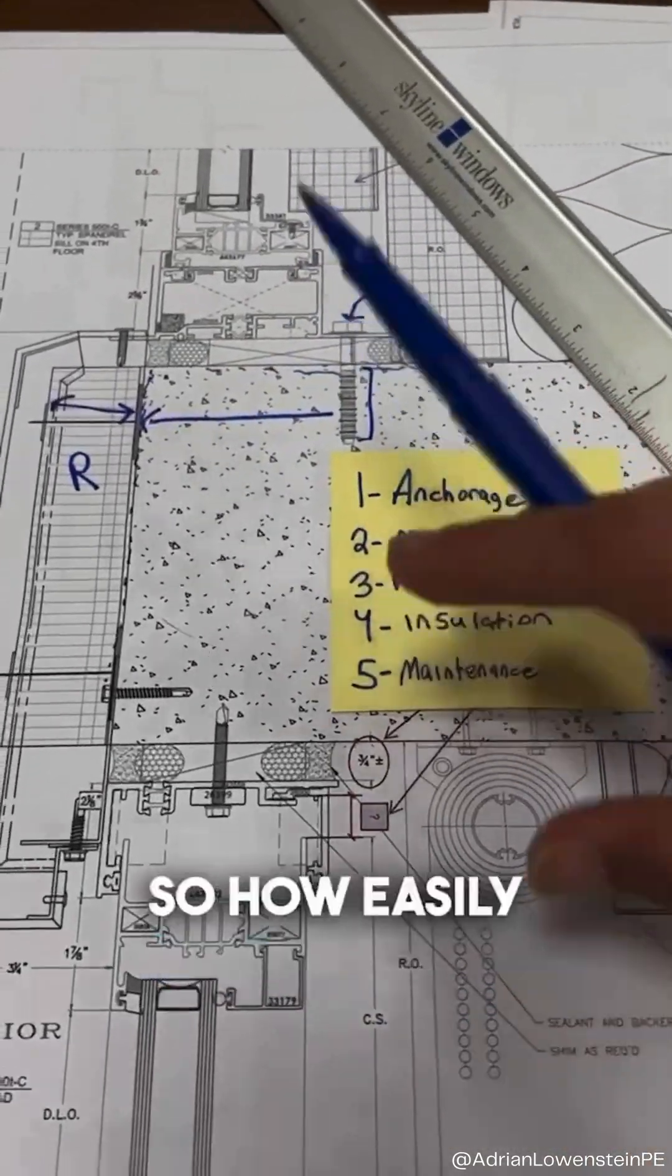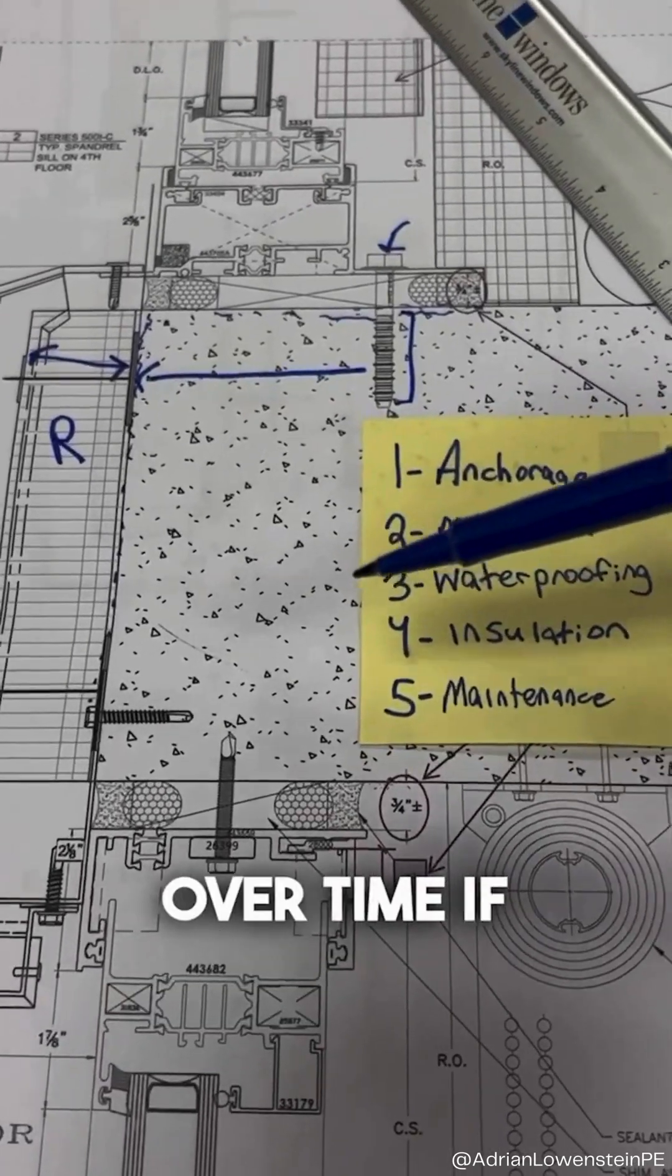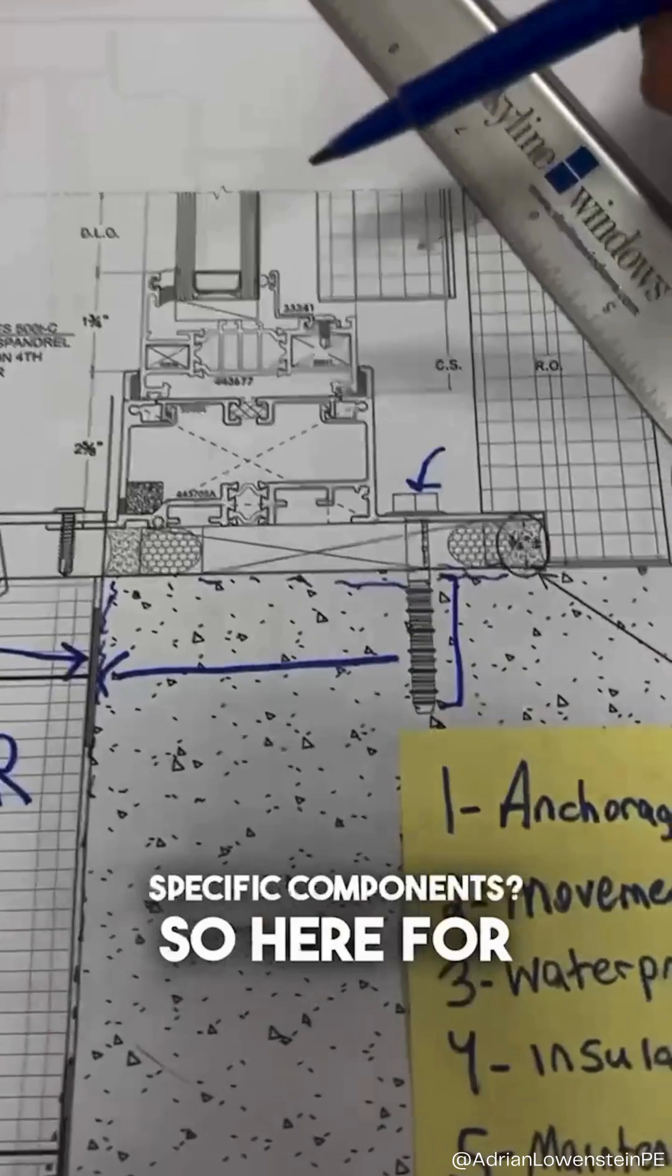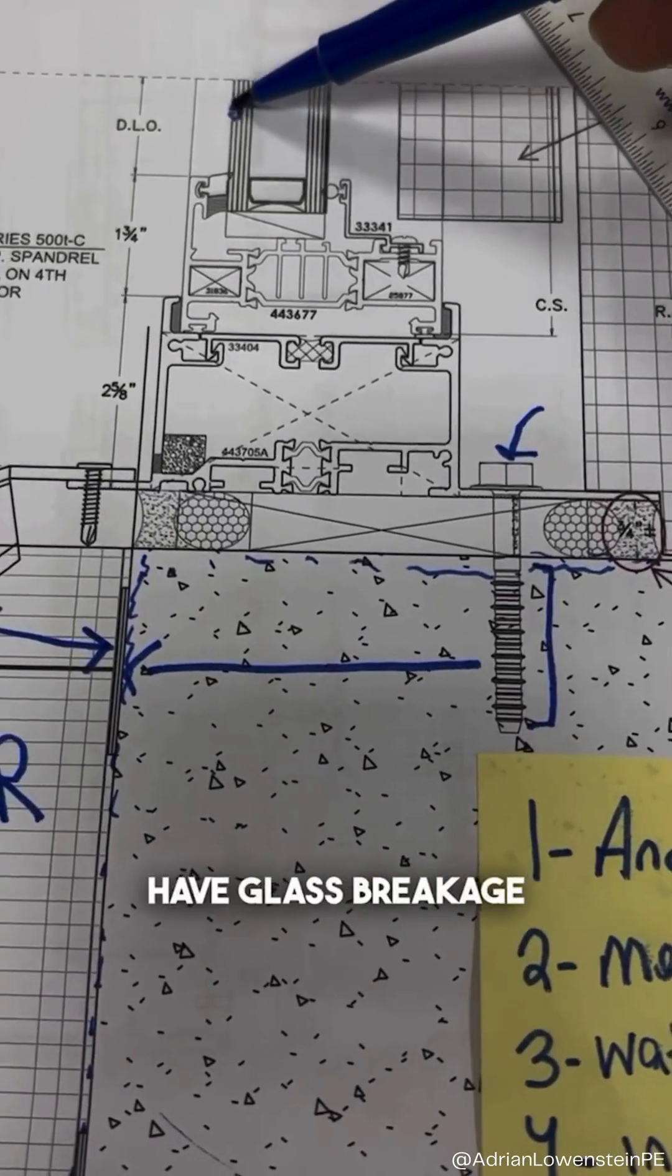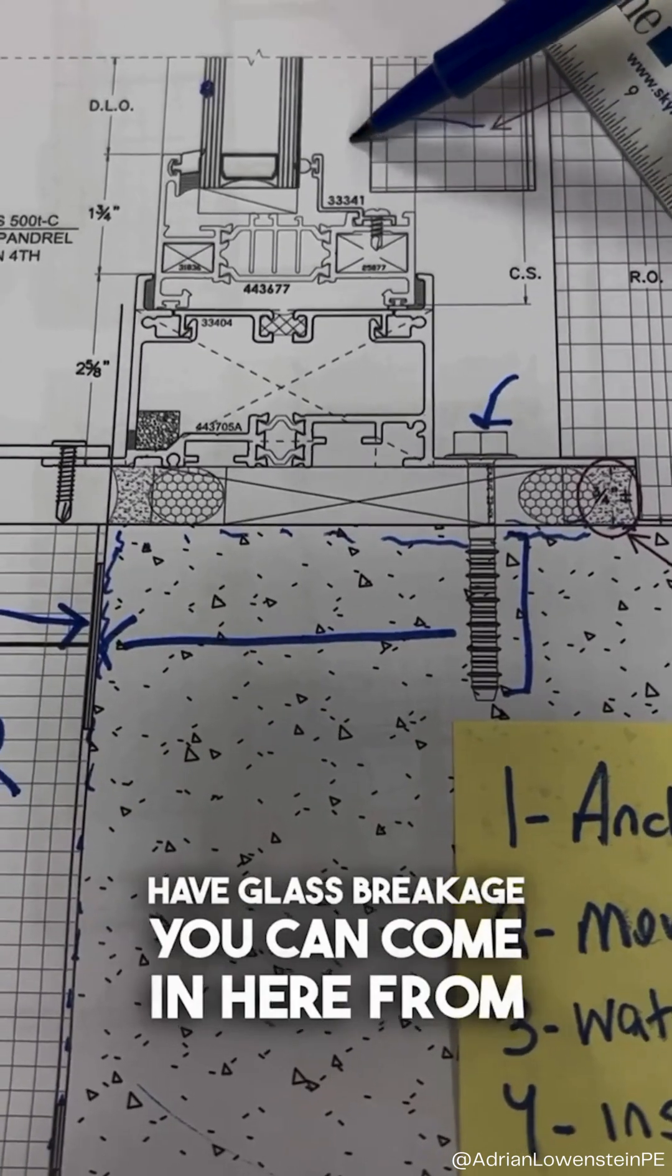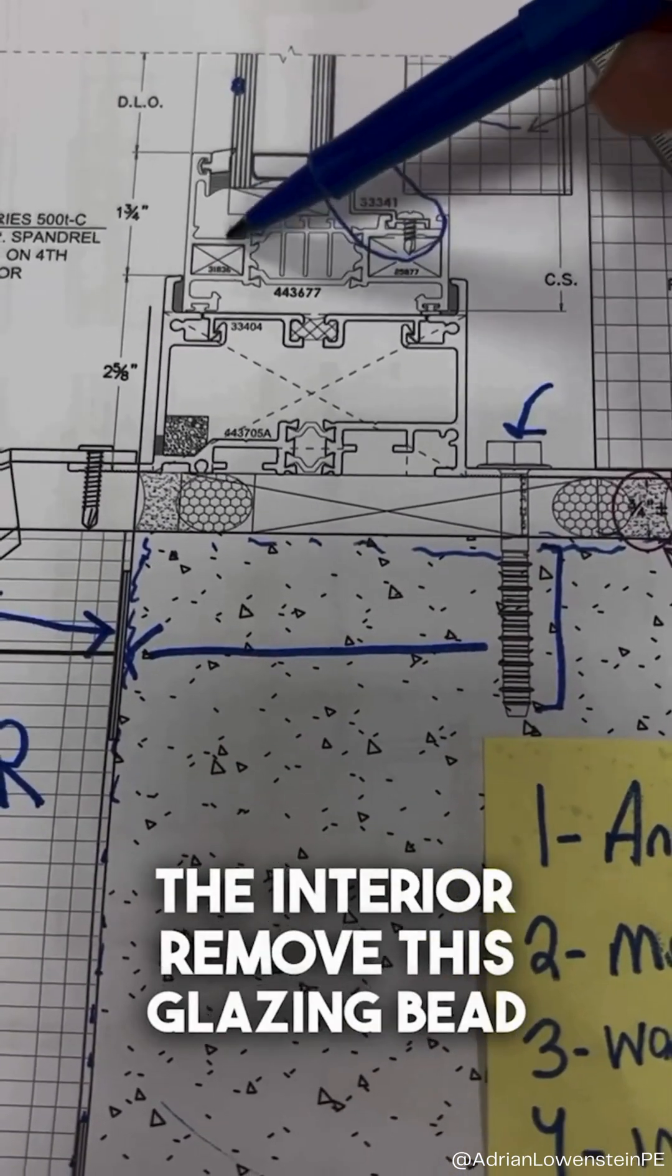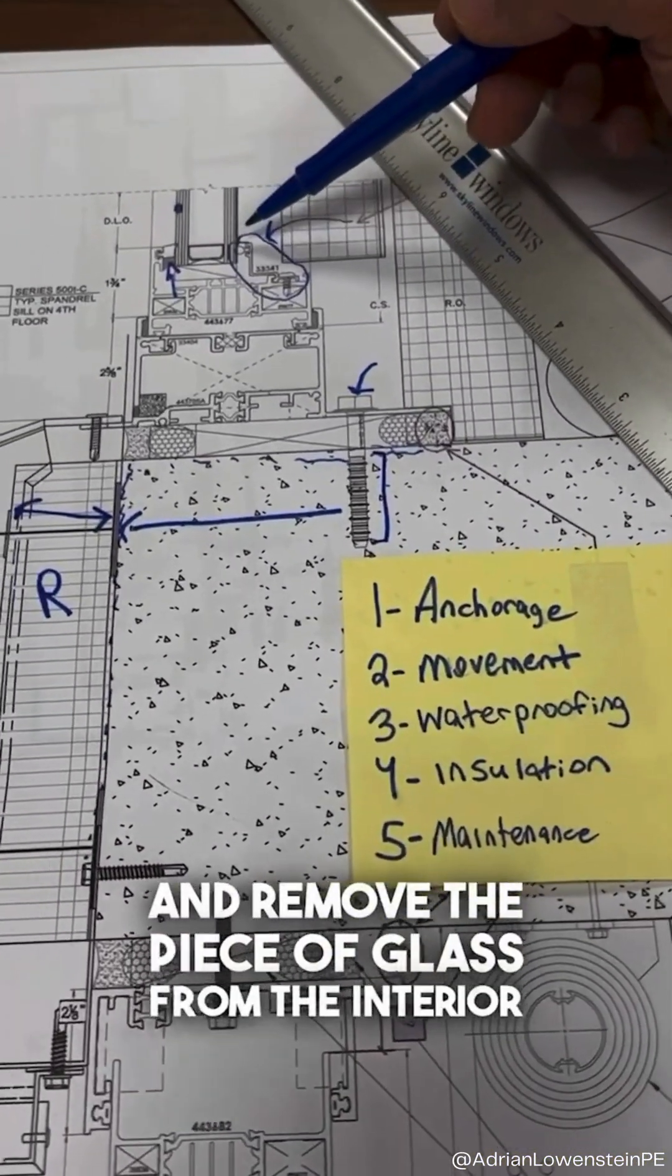Number five is maintenance. So how easily can you maintain the system over time if you have damage or failure of specific components? So here, for instance, you could see the glass unit. If we were to have glass breakage, you can come in here from the interior, remove this glazing bead, cut out the structural silicone bite, and remove the piece of glass from the interior.